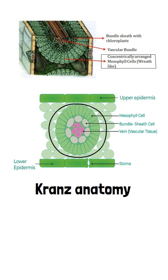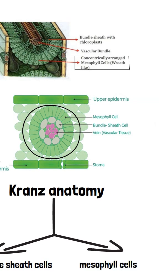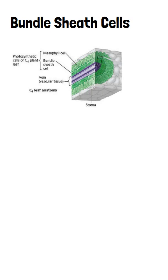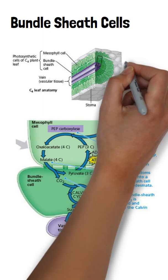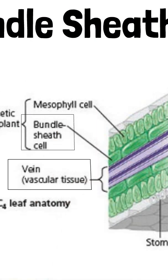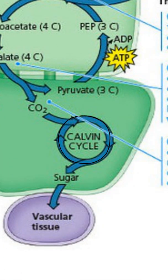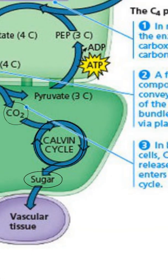In plants with Kranz Anatomy, there are two different types of cells: bundle sheath cells and mesophyll cells. Bundle sheath cells are large cells that surround the leaf vascular bundle. Their main role is in the Calvin cycle, where carbon dioxide is fixed into sugar.